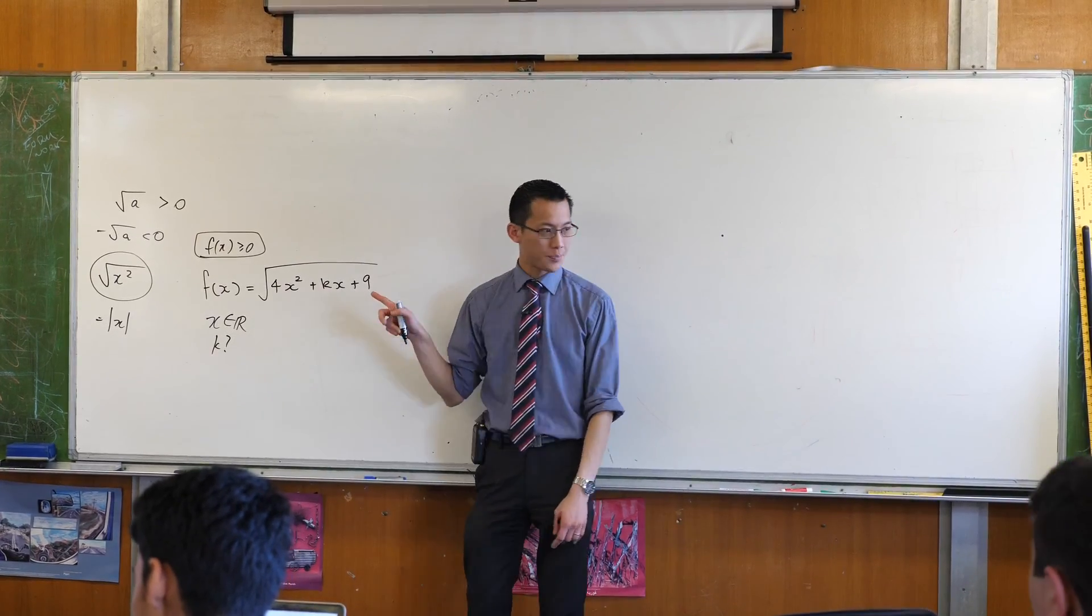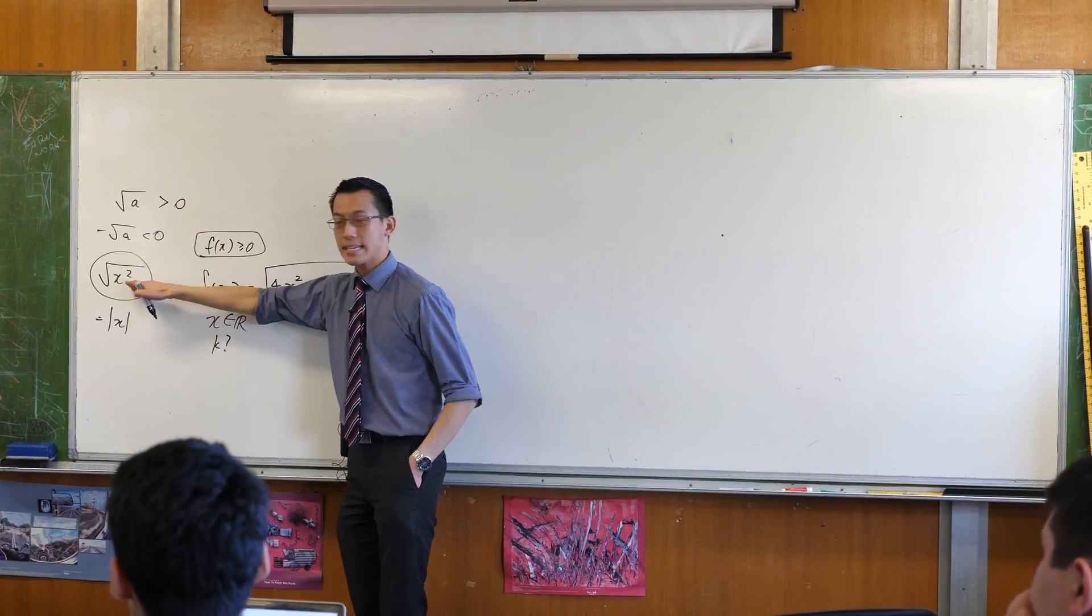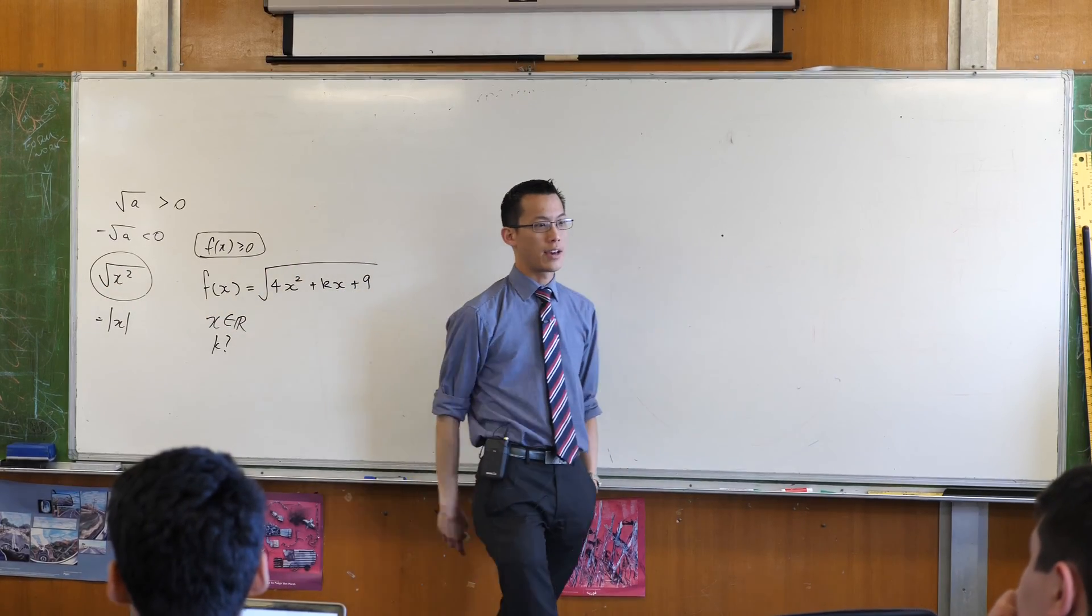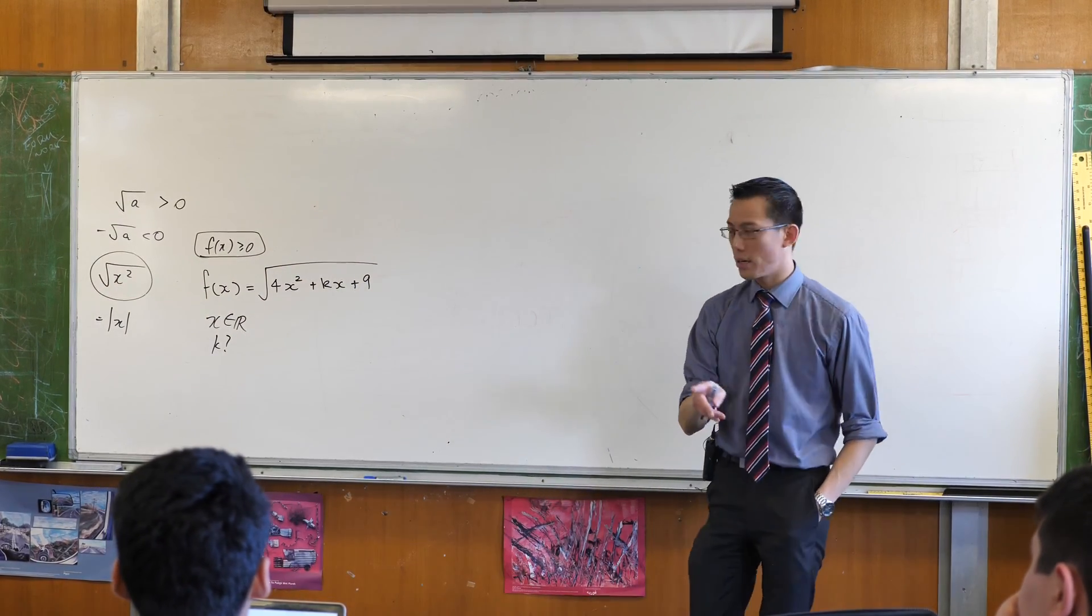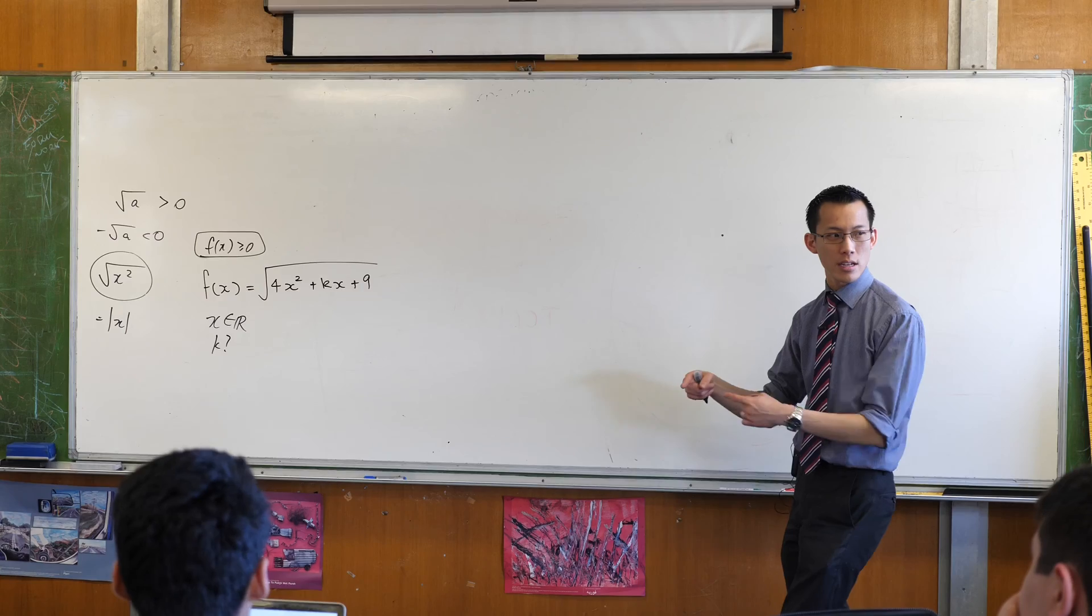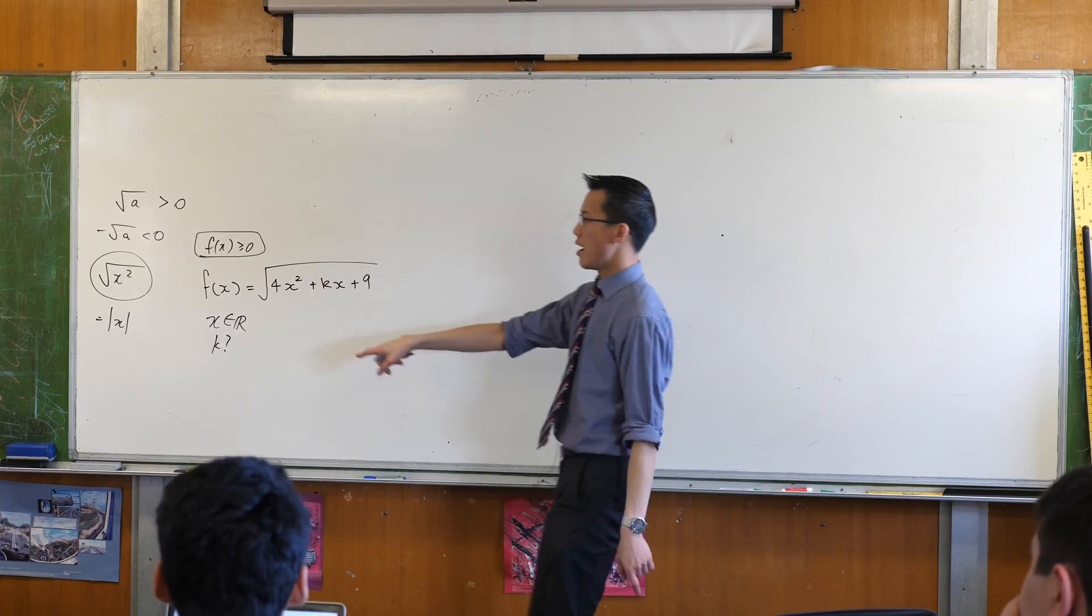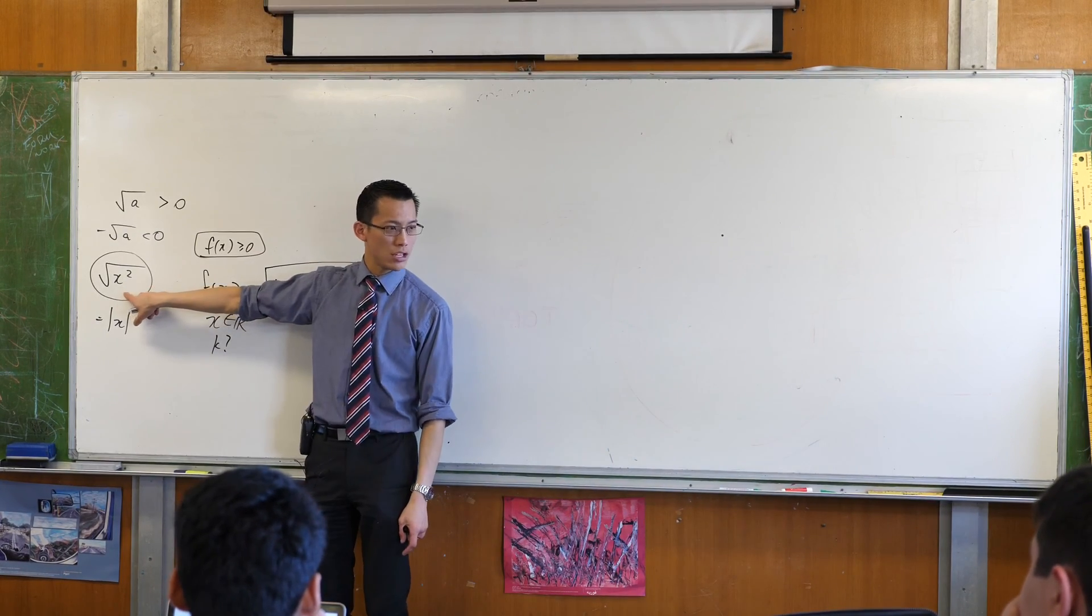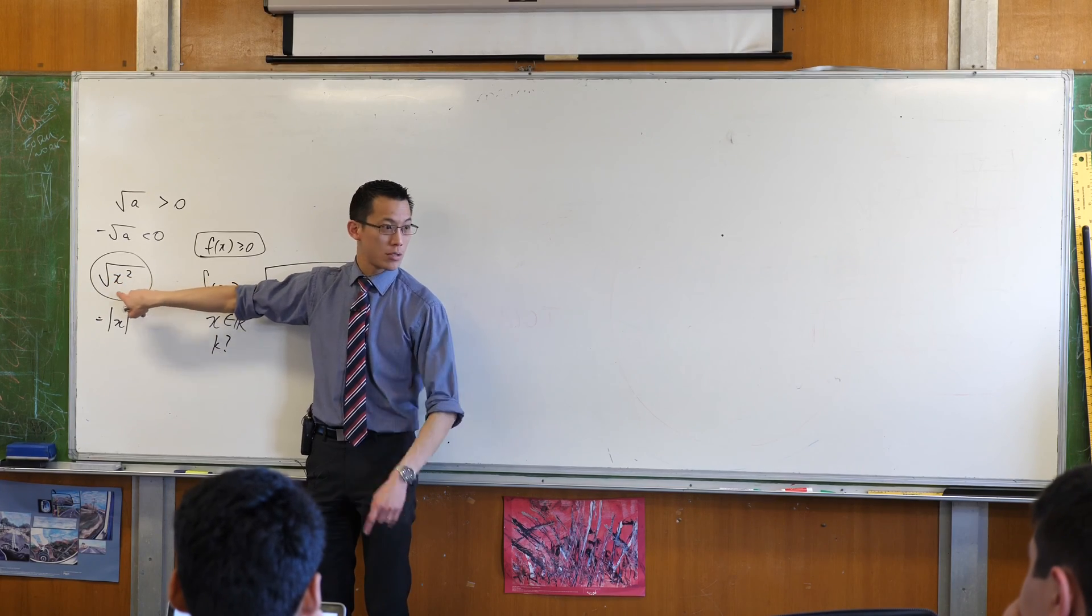So what does it mean for this? The reason why this exists for all real values of x is because no matter what you put into x, you always end up with a positive or zero underneath the square root. Do you agree with that? You can put negative numbers in there, positive numbers, you're fine.